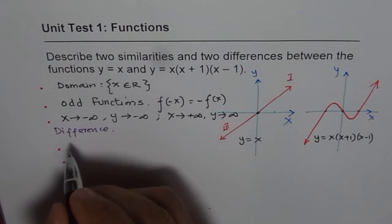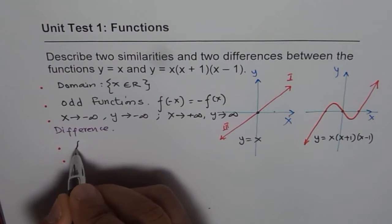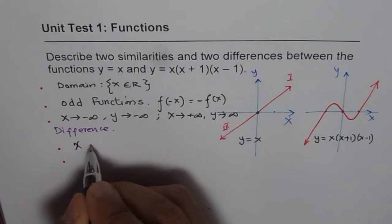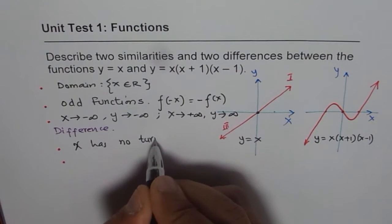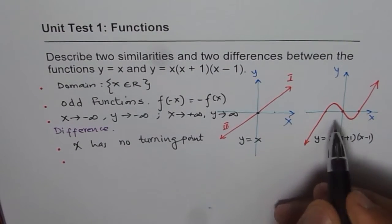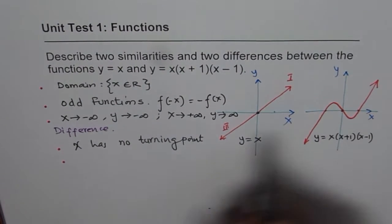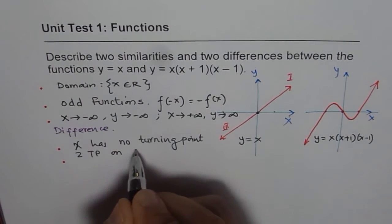f of x has no turning point. The first function, x, linear function, has no turning point. Whereas, we have two turning points on cubic function.